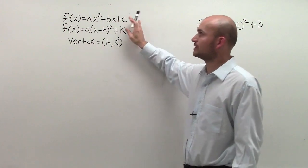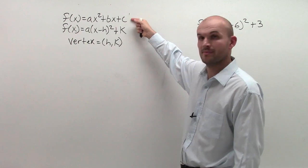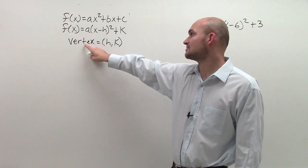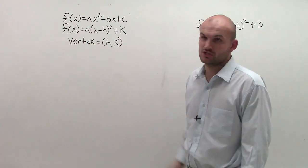However, if we can transform them or they already come in this form, it's very easy for us to determine the vertex, which is h comma k.